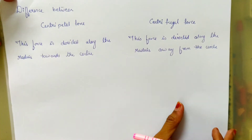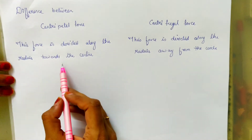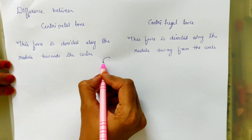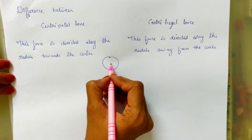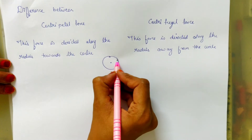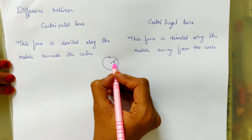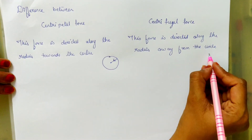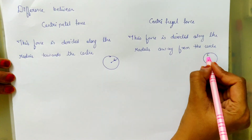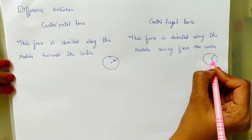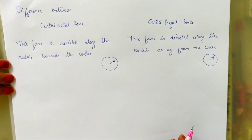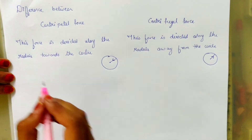Now let's see the difference between the two. Centripetal force acts along the radius, towards the center. This means it is along the radius but towards the center. Whereas centrifugal force is also along the radius, but away from the center. So this is the first point.